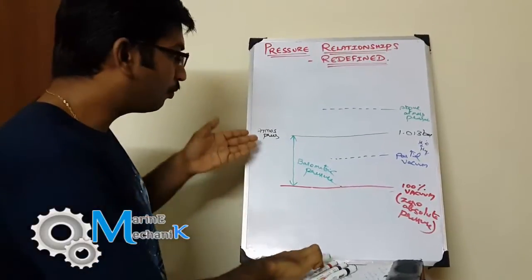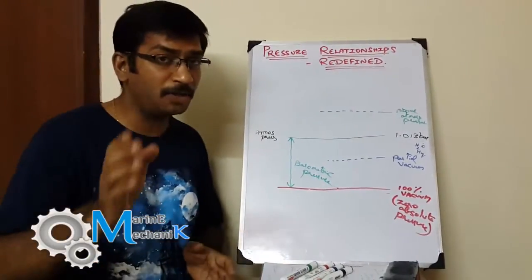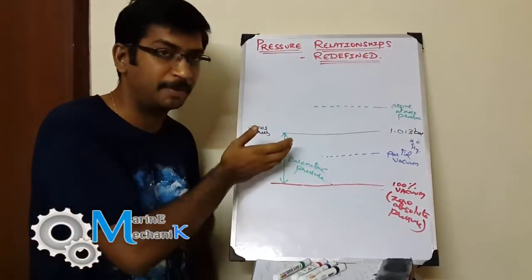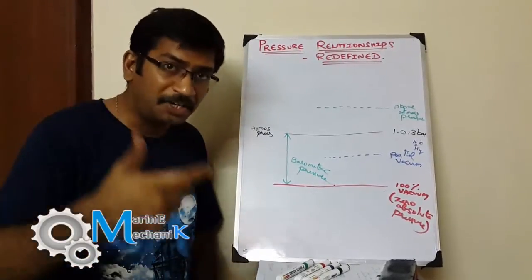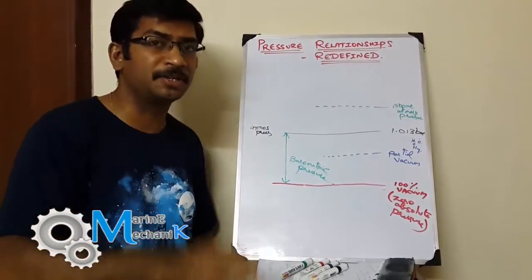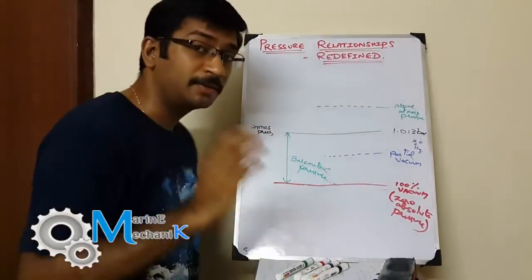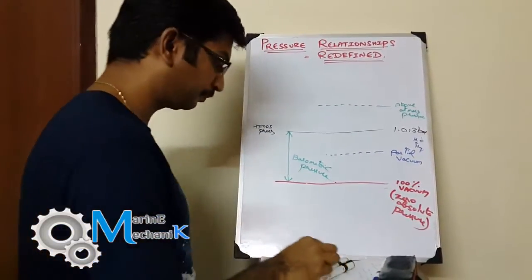So now we know what atmospheric pressure is and that it is measured with a barometer. The pressure measured by a barometer is barometric pressure. Now let's move on to gauge pressure.